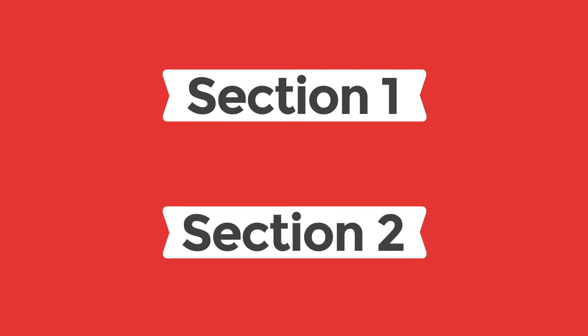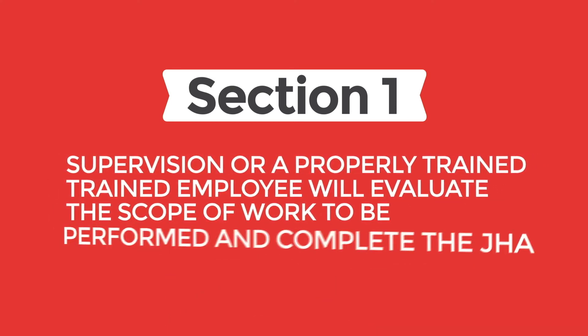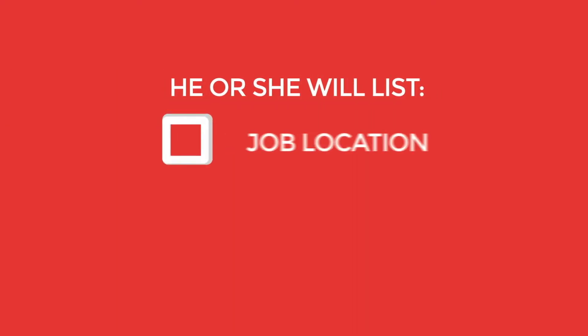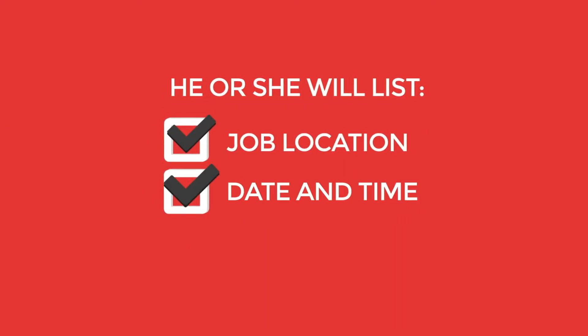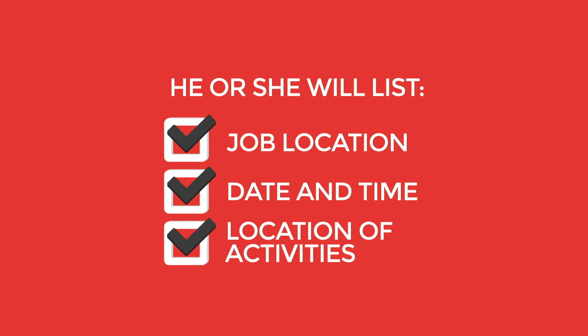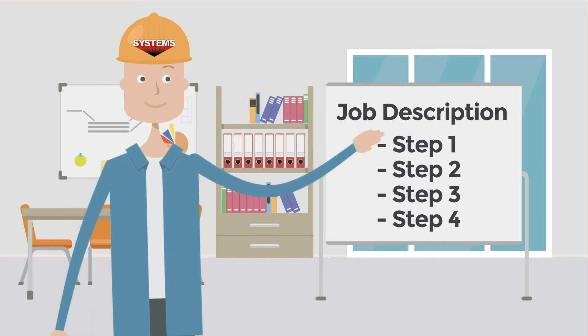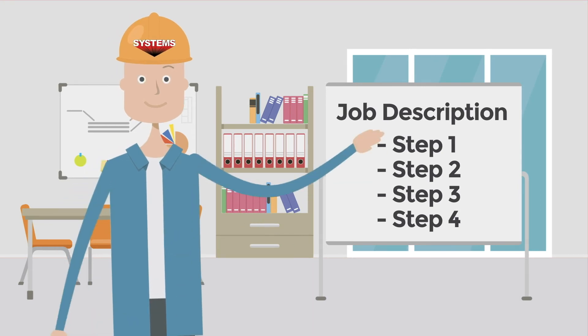And now we'll address Sections 1 and 2. In Section 1, supervision or a properly trained employee will evaluate the scope of work to be performed and complete the JHA. He or she will list the job location, date and time, and the location of activities where the work is taking place. Supervision will then mentally break the job into steps, considering all aspects of safe job execution, and list this under Job Description.